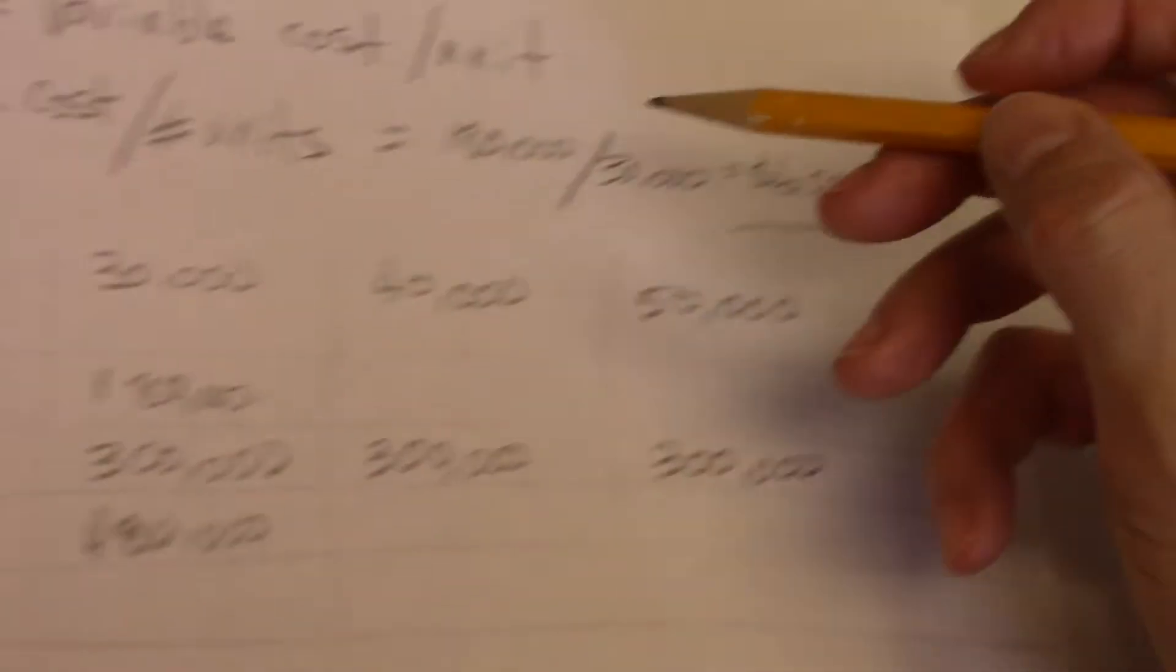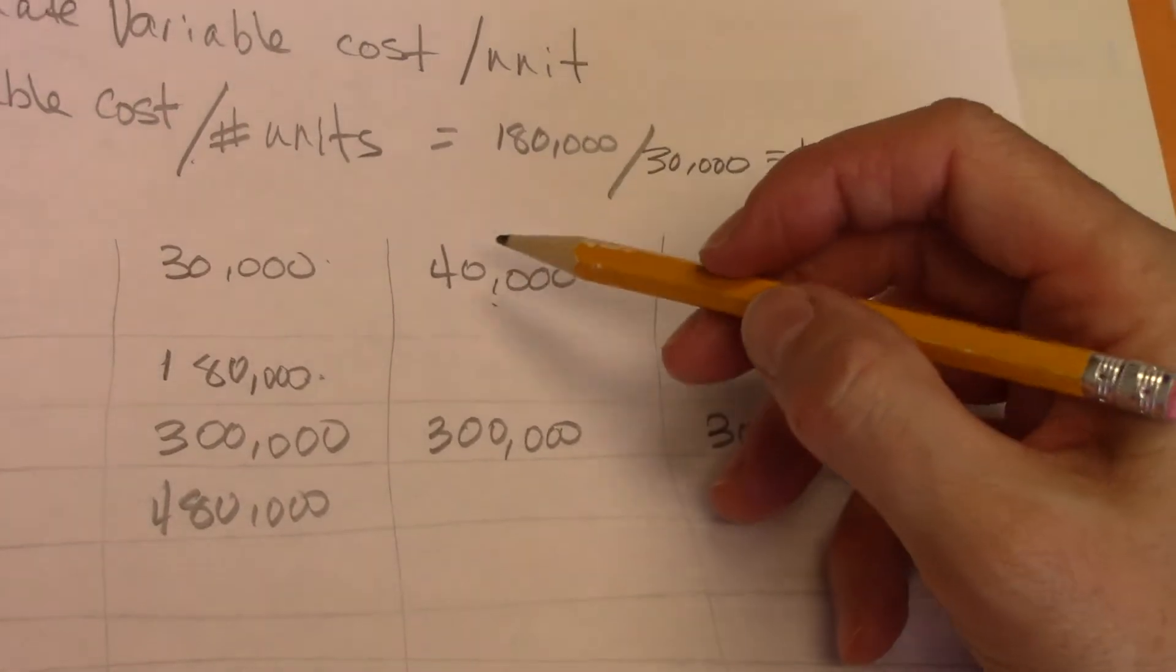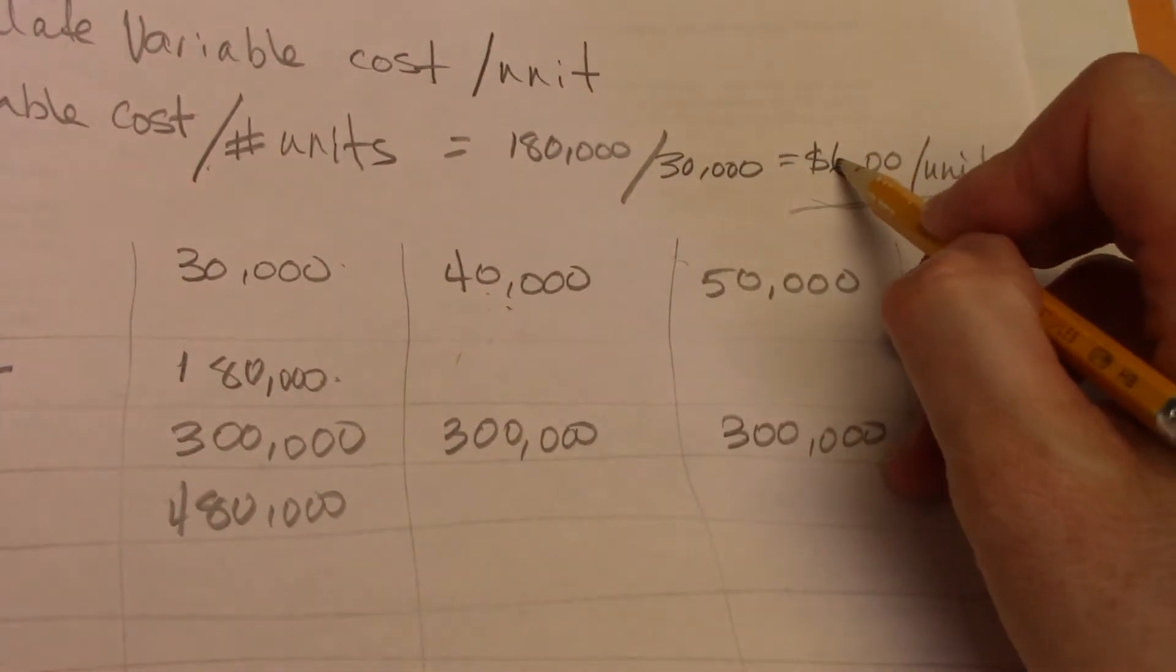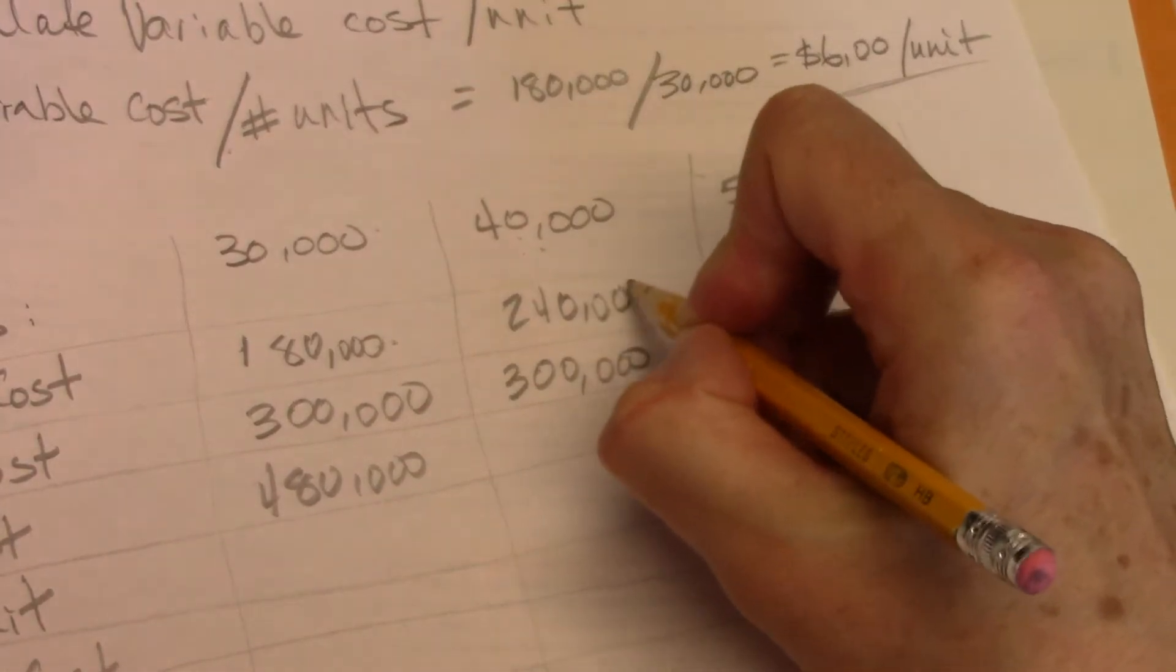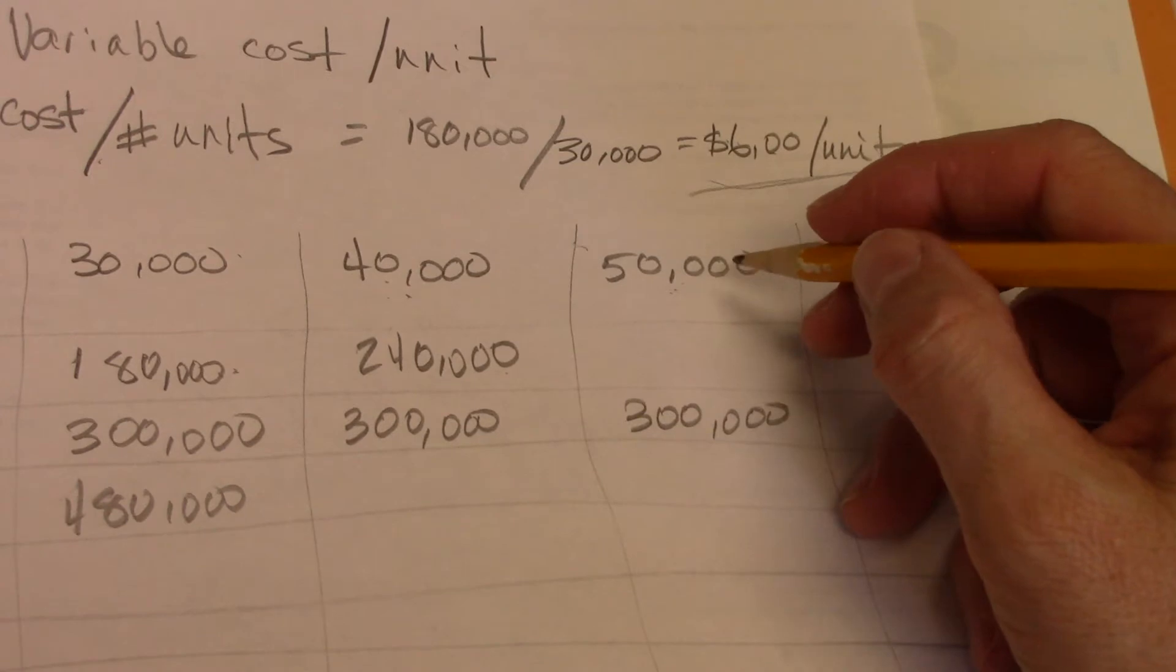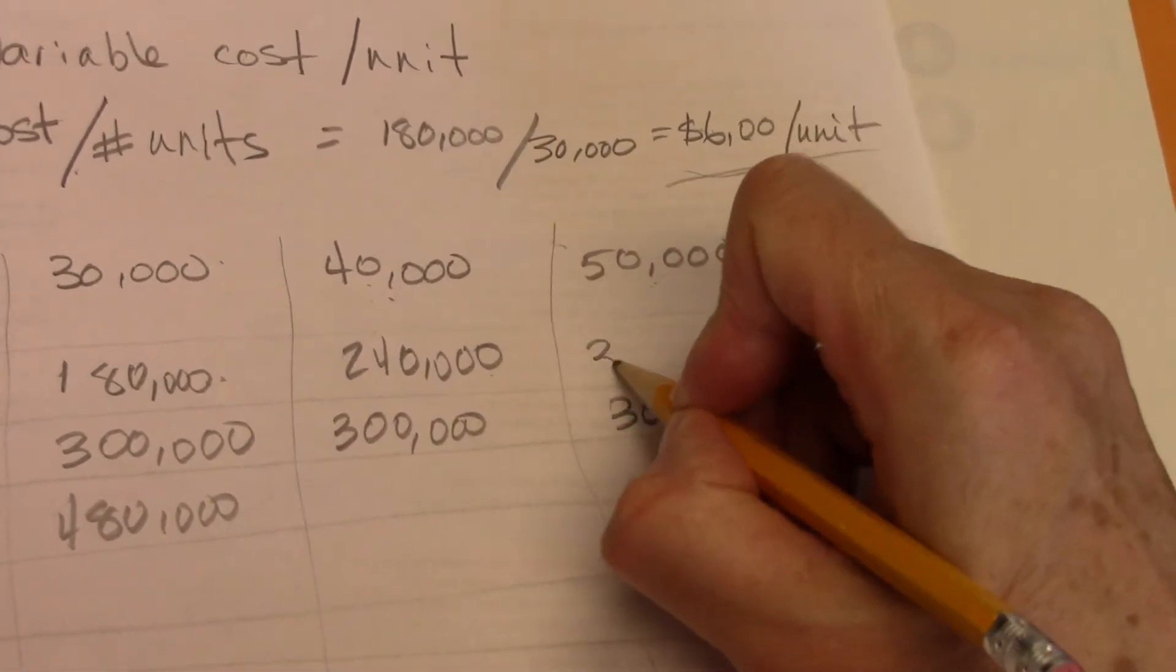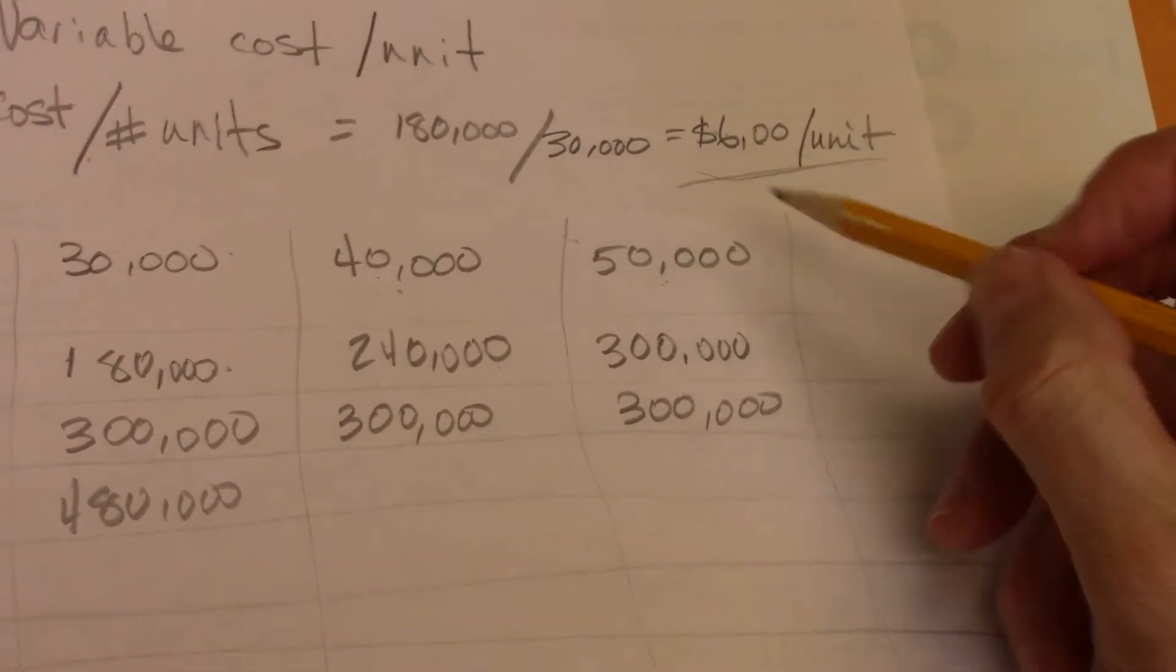So that means at $40,000, my total variable cost is $40,000 times 6. 4 times 6 is $24, so that's $240,000 total cost at $6 per unit. At $50,000 at $6 per unit, 5 times 6 is $30,000, so that's $300,000 total cost.